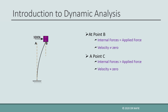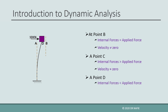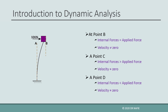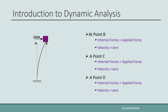Again, when the mass reaches B, its velocity will not be zero, and this will cause the mass to move further until it stops at point D. At point D, the applied force will be larger than the internal force, and this will cause the mass to move back towards point B. This oscillatory motion will continue around point B until the motion is damped out and the mass stops at the static equilibrium position at point B.